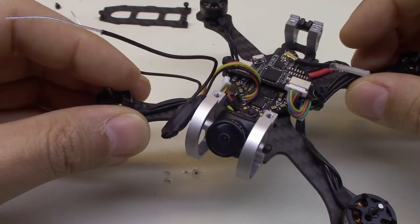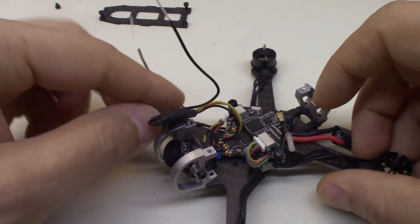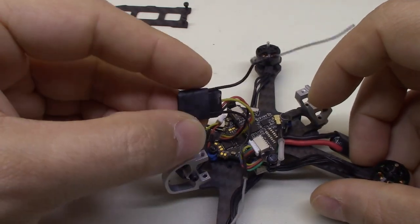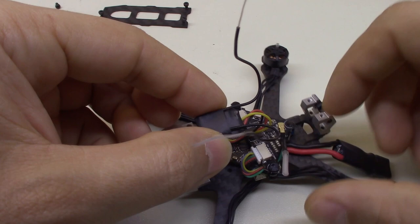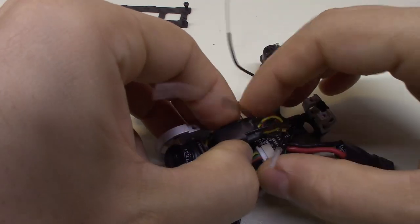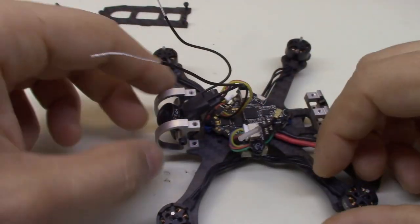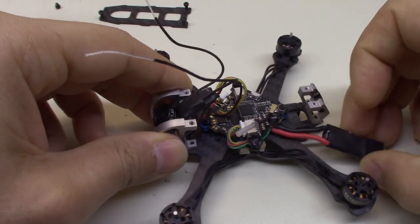I also mounted up my Runcam Nano 2 on here, and I have an XM Plus that's in here. I will go ahead and get that mounted on the bottom of the top plate, and we'll get the top plate put on and get some props put on it, and then we'll see how this looks.